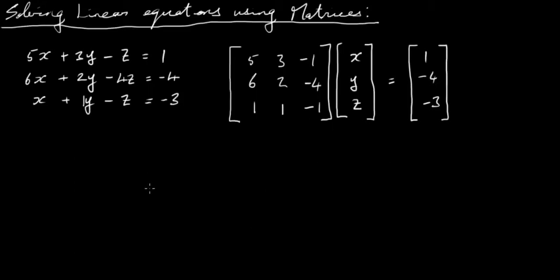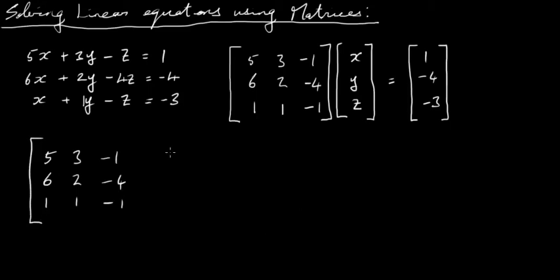I'm going to start by writing down the coefficient matrix: 5, 6, 1; 3, 2, 1; minus 1, minus 4, minus 1. Now I'm going to write this in what's called an augmented matrix form — I put the coefficients here and the three numbers from the right-hand side of the equations here: 1, minus 4, minus 3.